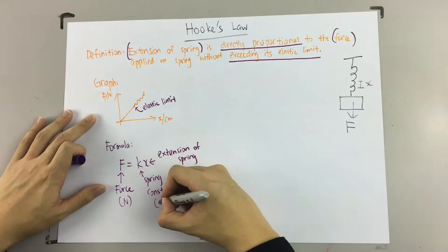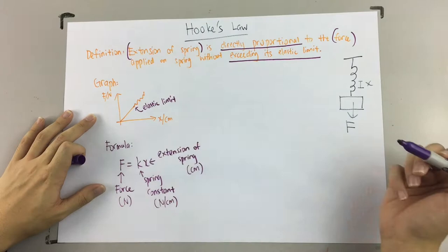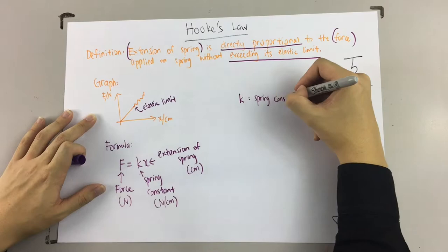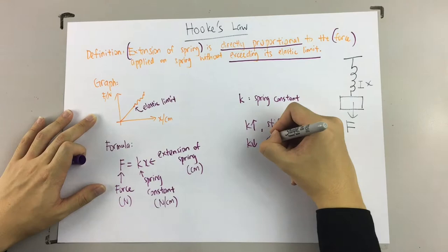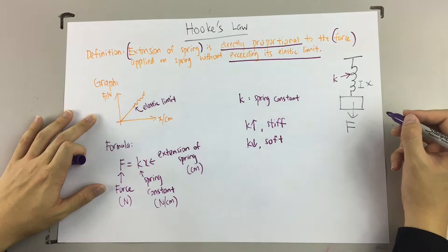Force has units of newtons, which is N. Spring constant is newton per cm. Extension is in cm. So, what is spring constant? Spring constant is about the stiffness of the spring. When spring constant is higher, it means it's stiffer. When spring constant is lower, it is softer.